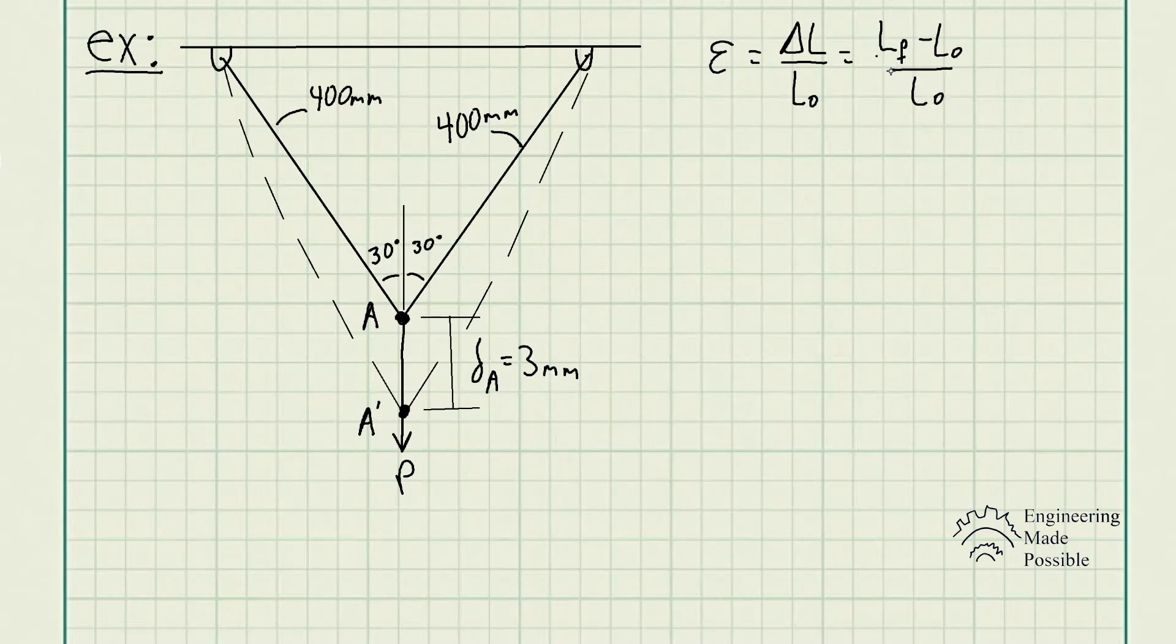We're supposed to find it for each of the wires. Now since we see that this is symmetric, we know that one wire is going to be deformed the exact same amount as the other. So all we have to do is solve the strain of one of the wires, which gives us the strain in both wires because they deform the exact same amount.